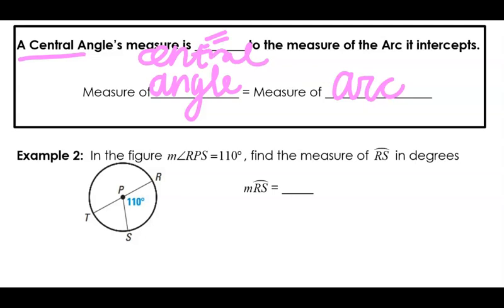So see this central angle here — angle RPS — it's equal to 110 degrees. So what's the measure of this arc that goes along here? Crazy easy. It's exactly the same as the arc.